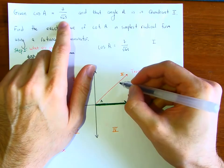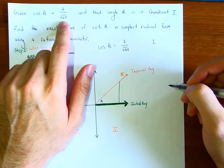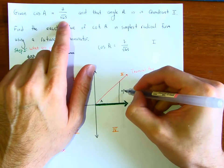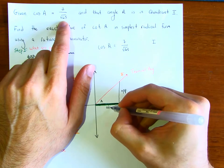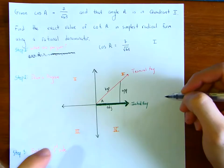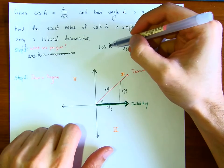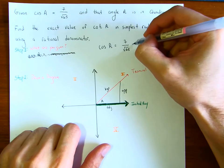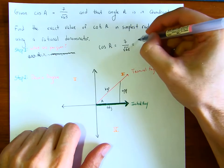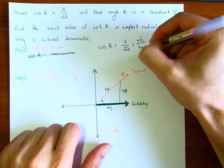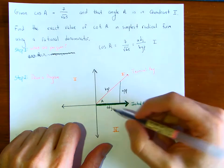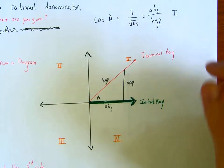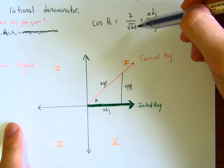The idea is: let's create a triangle. If this is angle a, this side is opposite angle a, this side is adjacent to angle a, and this is the hypotenuse. Now what are you given? You're given that cosine of angle a is 7 over square root of 65. And what do you know about cosine? Cosine is adjacent over hypotenuse. Let me zoom in a little bit more.